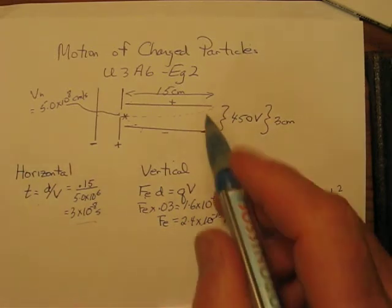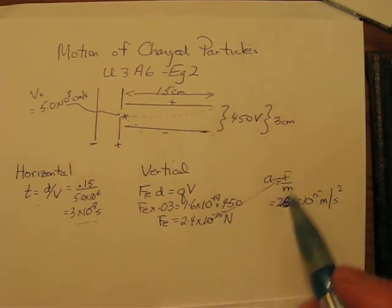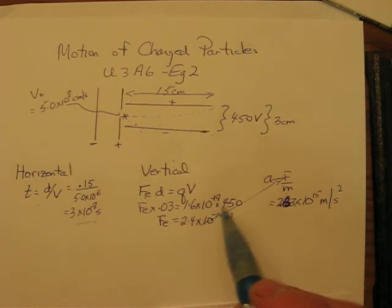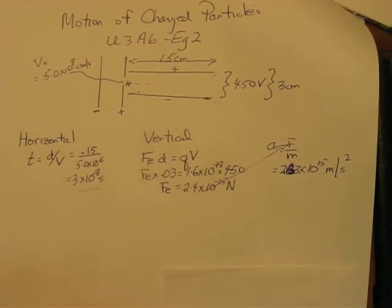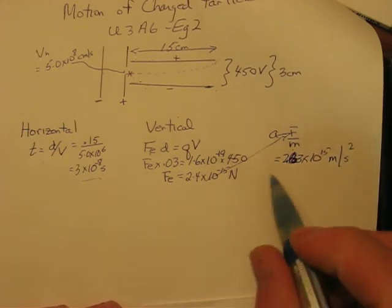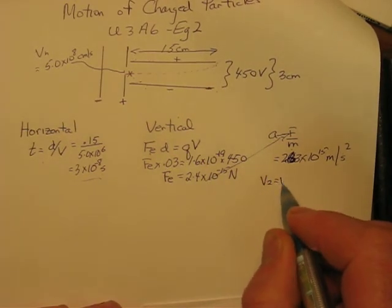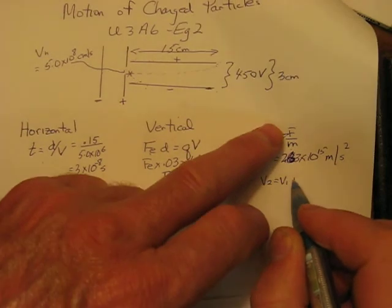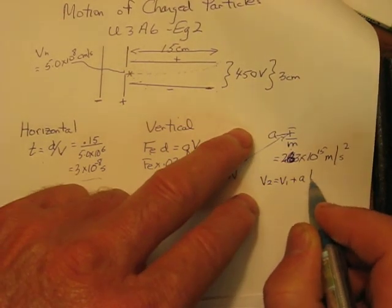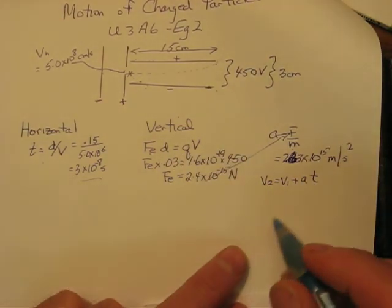Now, if we want to calculate the velocity at this point, we still haven't calculated the vertical velocity. We can do so by using this formula here. Velocity, final velocity, equals the initial velocity plus the acceleration times the time. And we have those values.